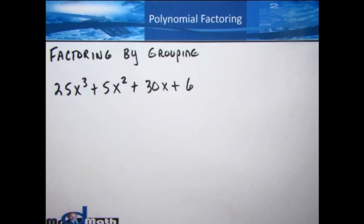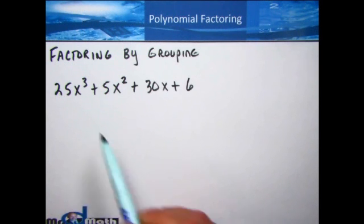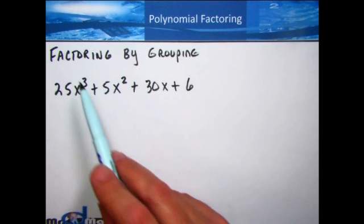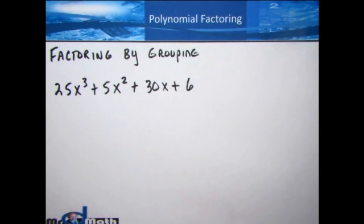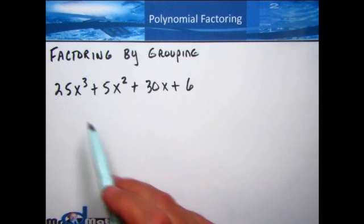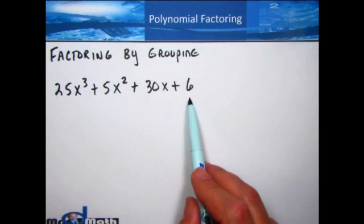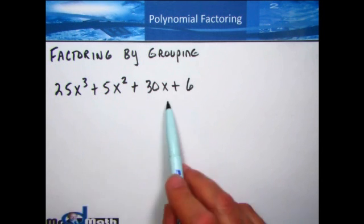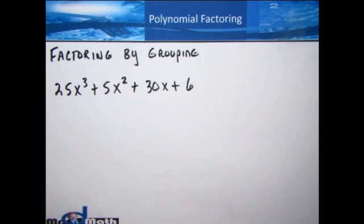In this section we will be doing factoring by grouping. Factoring is going to continue what we were working on before — looking for common factors, the greatest common factor. By grouping, we're going to take a four-term polynomial, group the first two terms together and the second two terms together, and then do factoring from there.